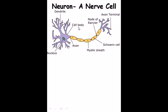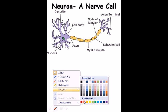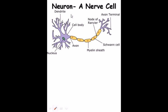Let me draw this out. Here we have a cell body from which we have the dendrons, and here is the axon part. The axon of the previous nerve cell will attach to the dendrons of the next nerve cell — that is how the interaction between neurons is going on.